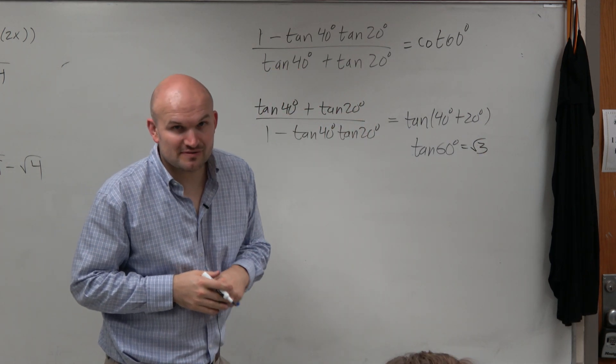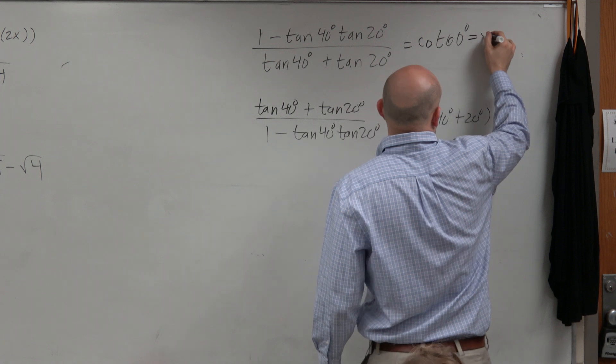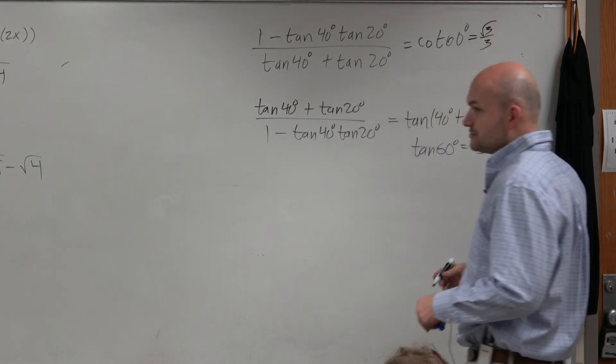So therefore, the cotangent of 60 degrees is the reciprocal of that, which is the square root of 3 over 3.